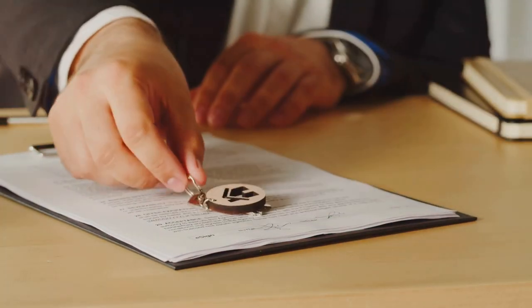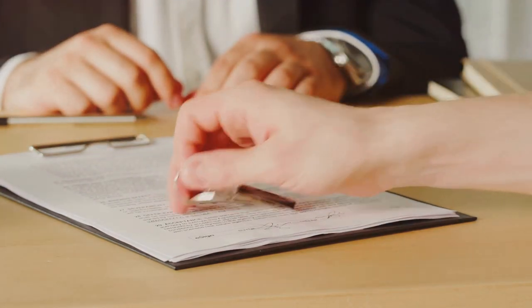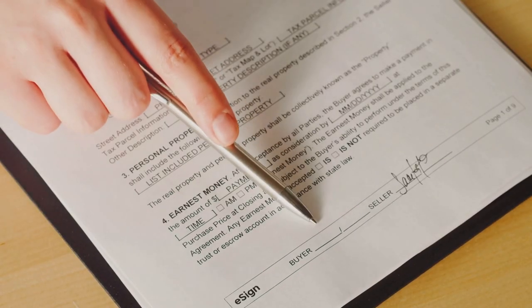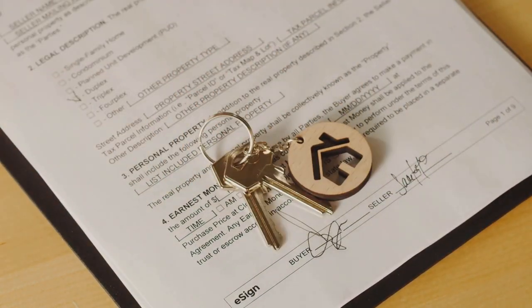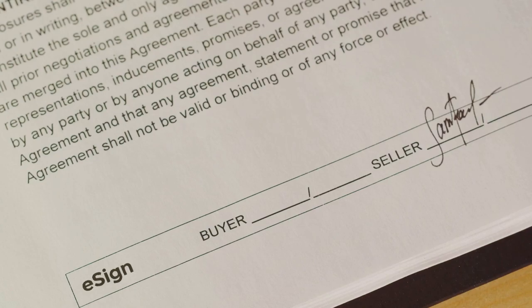Mortgage documents are crucial for buyers who are financing the property, detailing the loan terms, interest rates, and repayment schedule. For renters, the lease agreement sets the rental terms and tenants' rights and responsibilities.